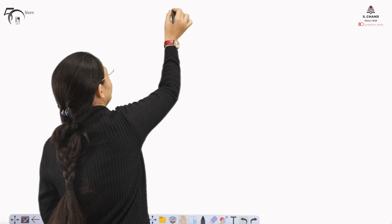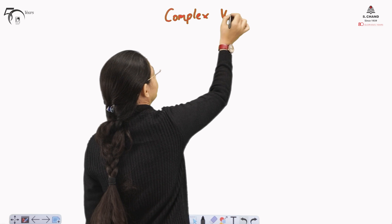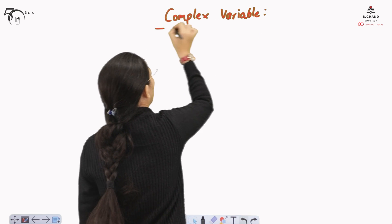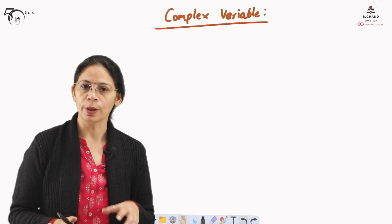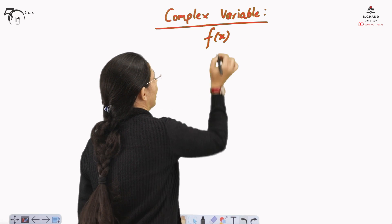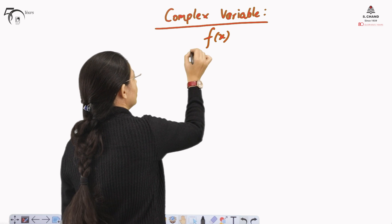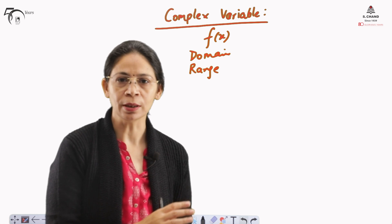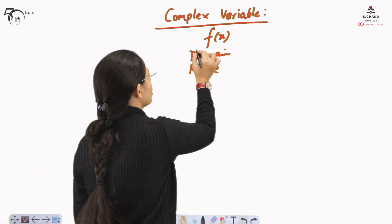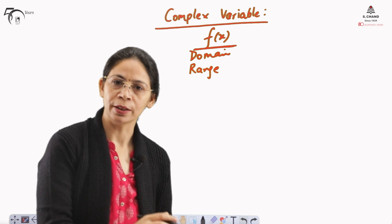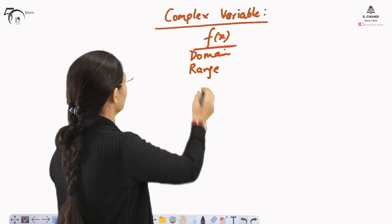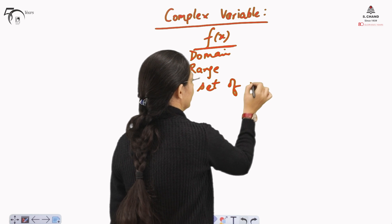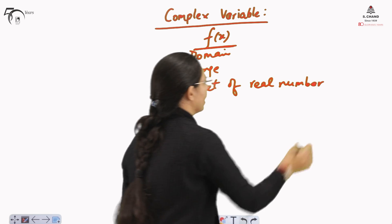The prerequisite is that you must know the operations on complex numbers, as that is required to understand complex variable. Here we start with the complex variable. First of all, let us try to recall the definition of the function in real numbers. In the definition of f(x), where f(x) is a real valued function, a domain and range were given. For every x in S, this function gives a value f(x) in its range. Here S was the set of real numbers, and that is why this function was called the real function.